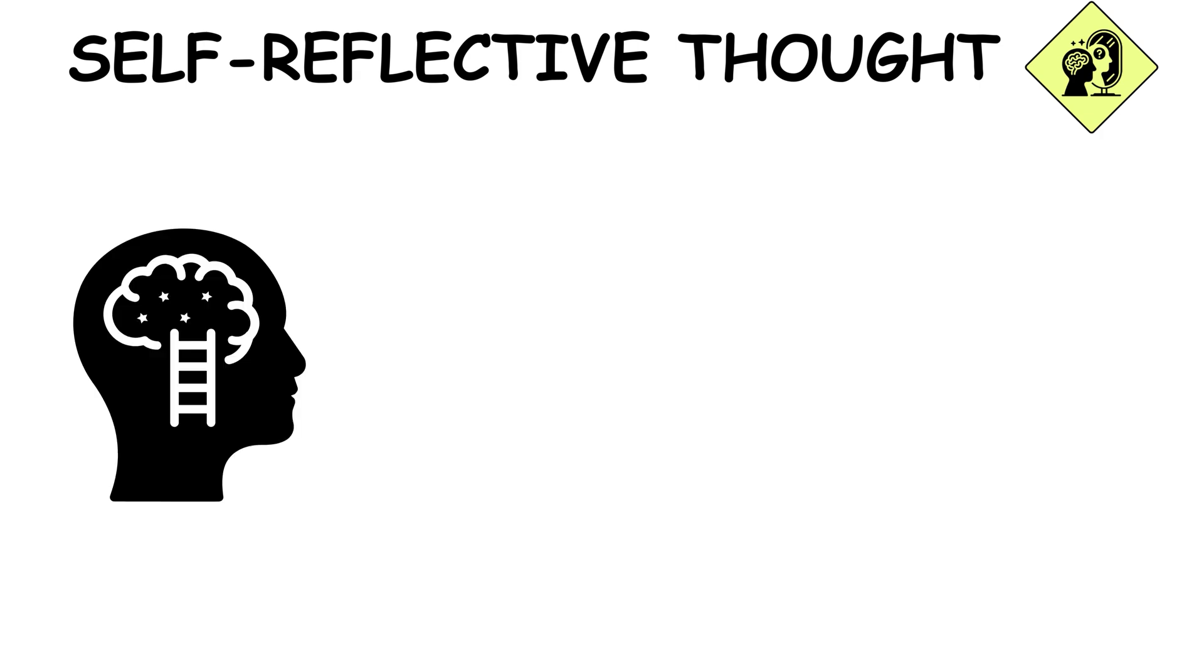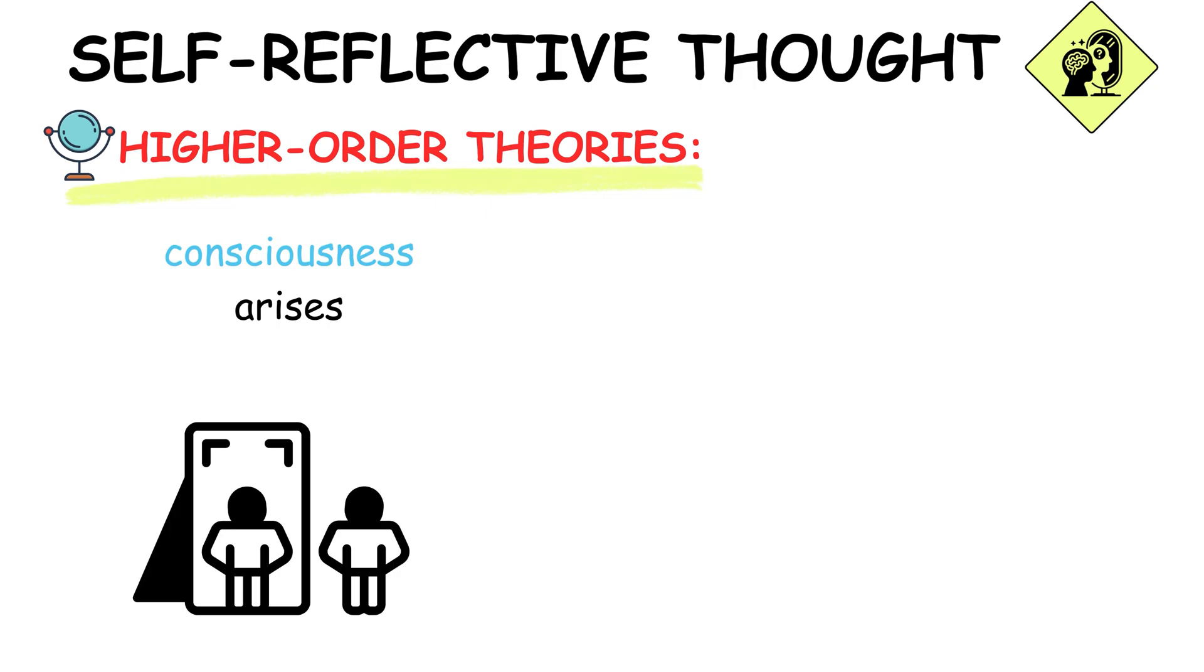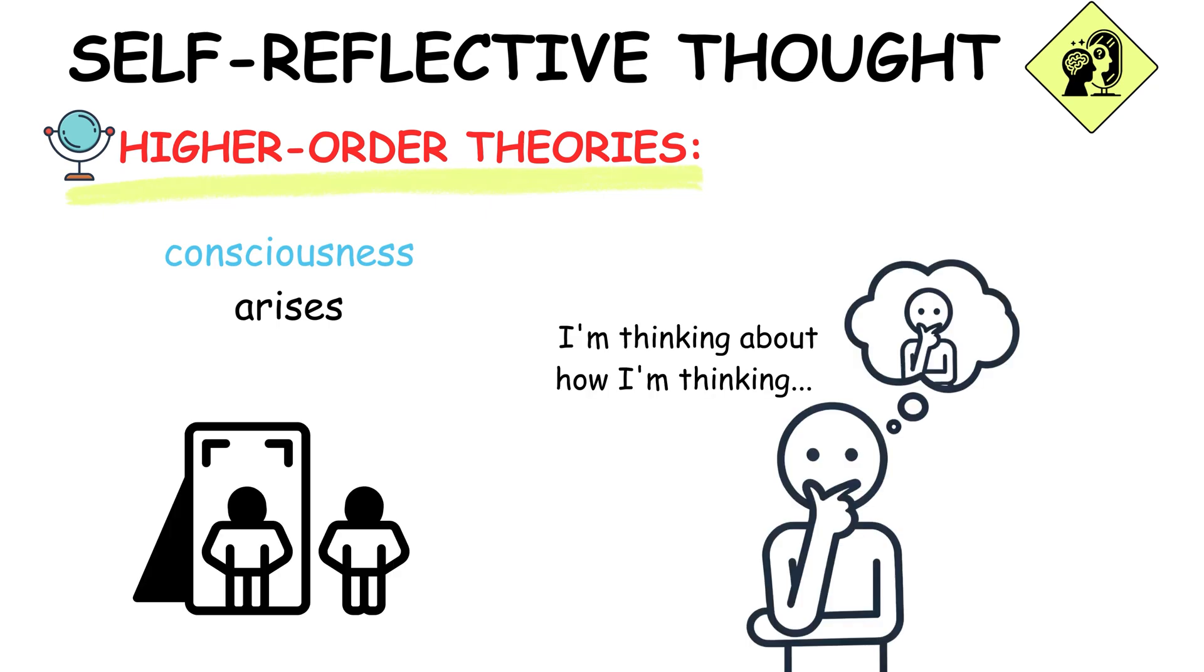Self-reflective thought dives into theories suggesting that consciousness arises from thoughts about our own thoughts, adding depth to self-awareness. Higher-order theories suggest that consciousness arises when we think about our thoughts. It's like a mirror reflecting itself, a mental state about another mental state, adding layers to our understanding of self-awareness.